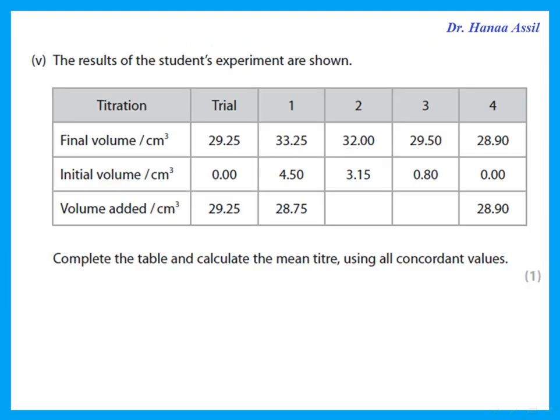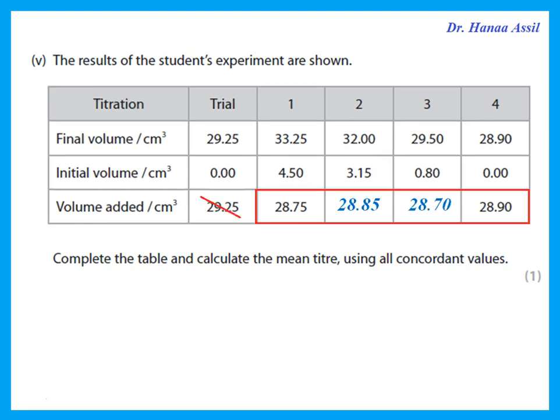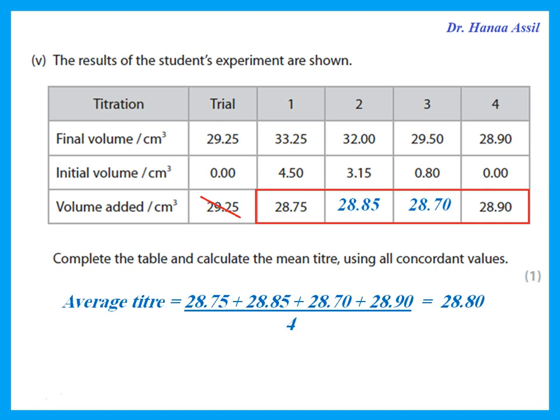The results of the student's experiment are shown. Complete the table and calculate the mean titre. For trial 2 and trial 3, subtract initial volume from final volume to get the volume added. To get the mean, look at all the trials and decide which are concordant — concordant means within 0.2 of each other. The first trial is way off from the rest; all the others are concordant. Add those and divide by their number. The average titre is 28.80 cm³.